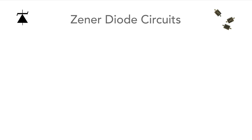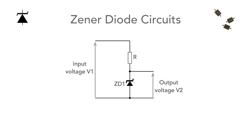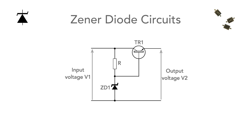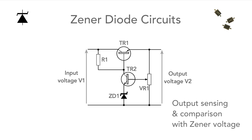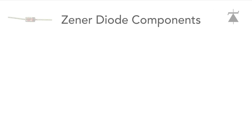The Zener diode can be used in many circuits. Here we see the basic shunt regulator circuit, and here are some slightly more complicated circuits with feedback in them. These can be made adjustable and also give much better regulation.